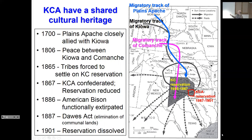They have a shared cultural heritage. In 1700, the Plains Apache were closely allied with the Kiowa, which they've kept up all these years — that's where a lot of the intermarriage is. For decades, the Apache weren't even known about; they were assumed to be some group of Kiowa, called the Kiowa Apache, but more correctly referred to as the Plains Apache. It is a dialect different from some of the other Apache groups.